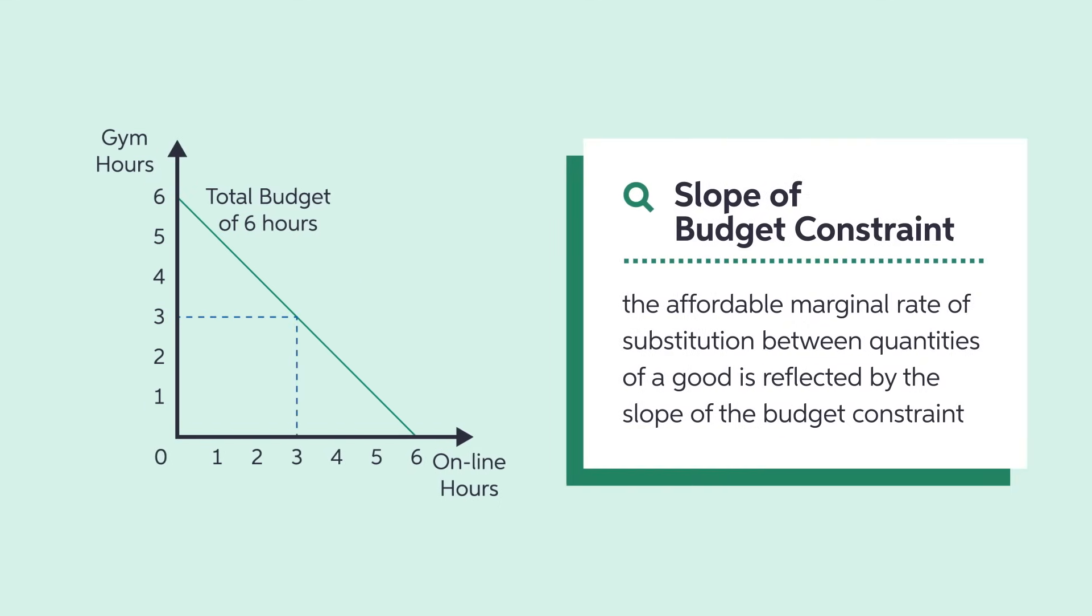Garrett faces a one-for-one trade-off between gym hours and online hours. If he forgoes one hour of gym time, he gains one hour of online time. This slope value of minus 1 represents the marginal rate of substitution that is affordable along Garrett's budget constraint.